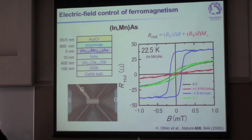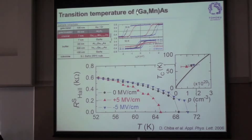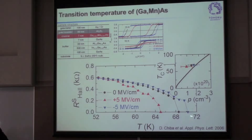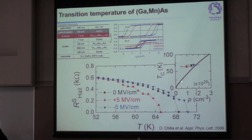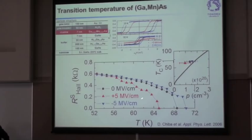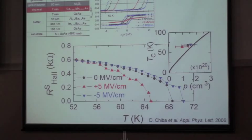We did a very similar experiment with gallium-manganese arsenide, seven nanometers thick. This is our spontaneous magnetization measured by the Hall effect; the temperature at which it goes to zero is the transition temperature. We can change this transition temperature by applying ±5 MV/cm. Our theory model and experimental result agree on the order of magnitude of the transition temperature, but the slopes are very different, so we need to understand this better.